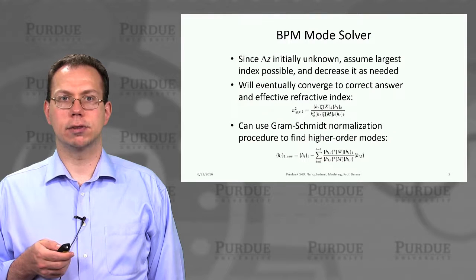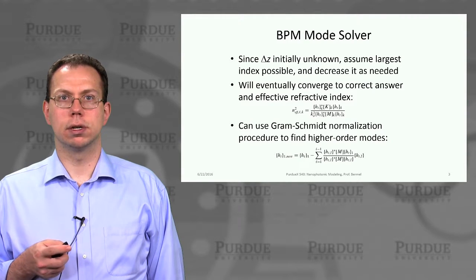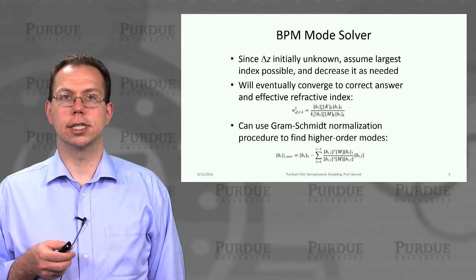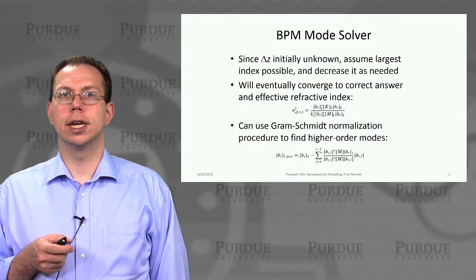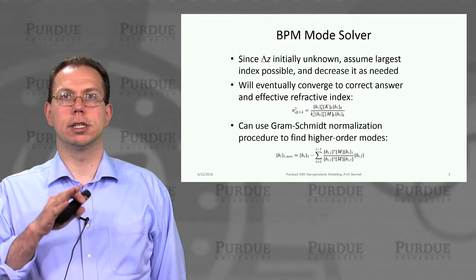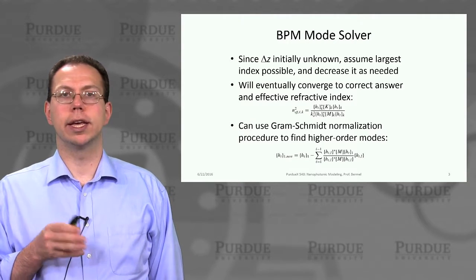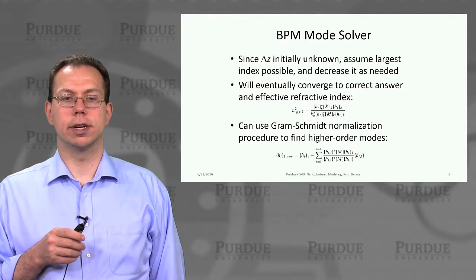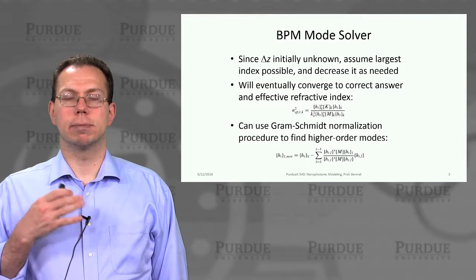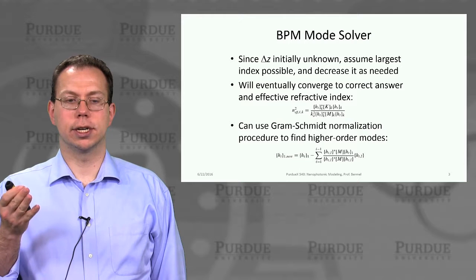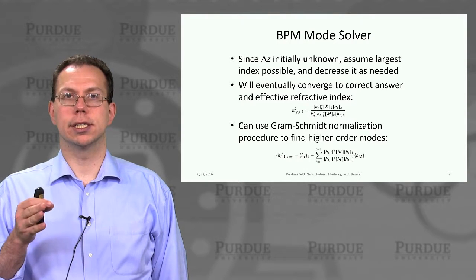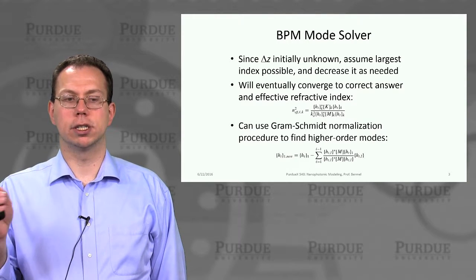There's a big catch: we don't know the effective mode value, and therefore we don't know delta Z. What we have to do is just assume the largest index possible — usually the core index of a fiber optic waveguide, or if it's a photonic crystal waveguide, it might be the largest index on the outer region. We can decrease that as needed, since it would never increase beyond the highest value. Eventually, after enough propagation in the imaginary Z direction, we get an effective refractive index that should be fairly consistent and stop changing as we converge on delta Z.